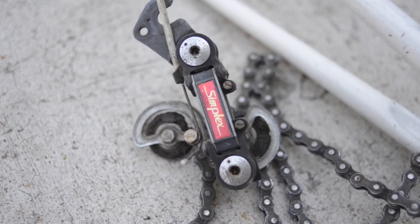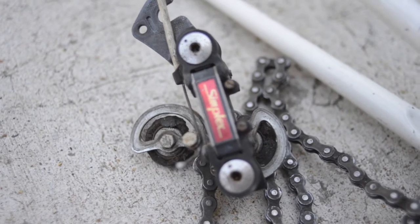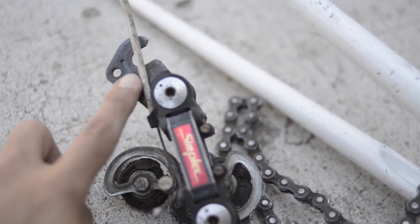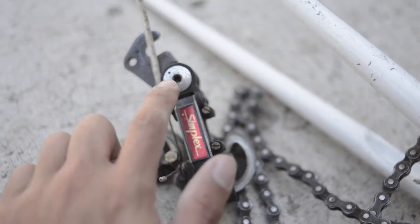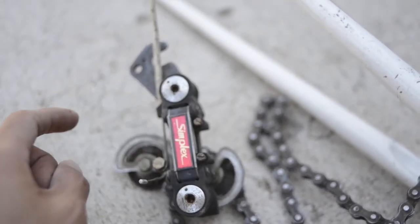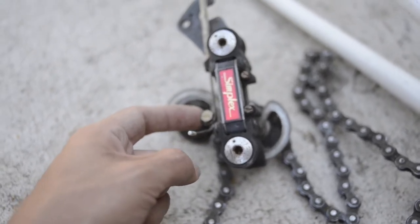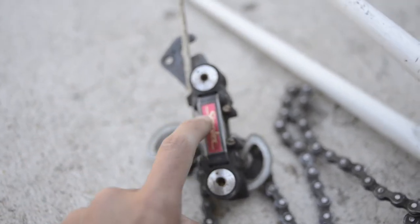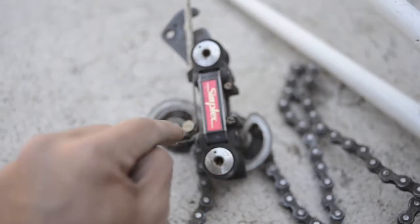All right, so we're going to start out with the rear derailleur. It's a Simplex. We're going to go ahead and take off the hanger from the derailleur with a simple allen key. Got to remember to remove the cable, the shifter cable. This is a friction shifter, might switch to index, or might keep the friction, not too sure.